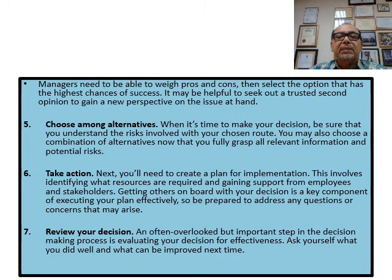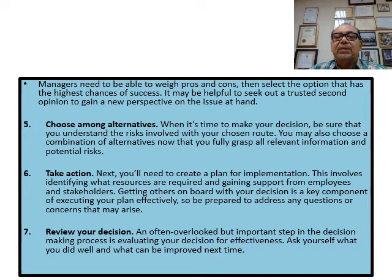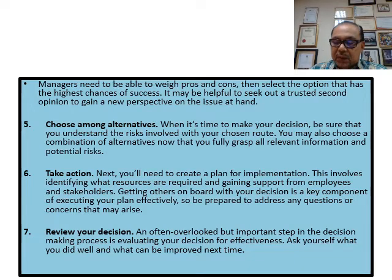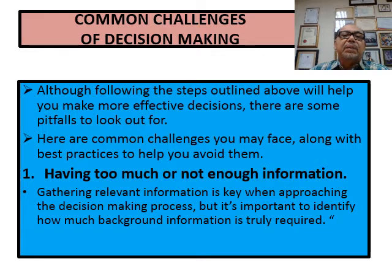Step five: choose among alternatives — once you have all the evidence in front of you, choose from two, three, or four available alternatives. Step six: take action — you cannot keep deliberating; from all the alternatives, decide which is the best and take action. Step seven: review your decision — make sure it is the best alternative out of all options, then implement it.